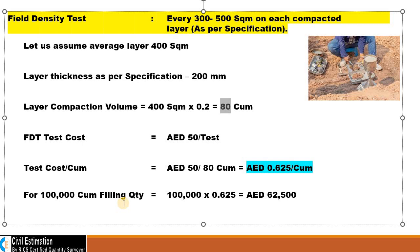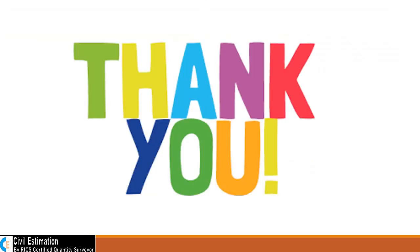For example, if the total filling quantity is 100,000 cubic meters, the FDT testing cost will be 100,000 multiplied by 0.625 AED per cubic meter, giving a total of 62,500 AED. This amount needs to be estimated while doing the backfilling works rate analysis. Hope this is clear to everyone — thank you.